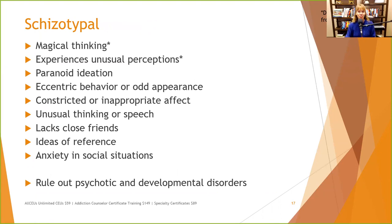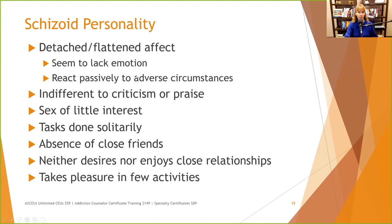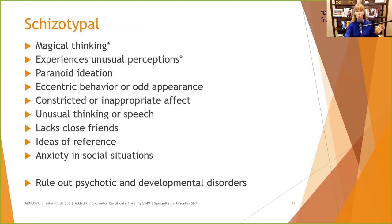Schizotypal: the defining features — the mnemonic is ME PECULIAR — include magical thinking and unusual perceptions. It's very similar to schizoid; however, schizotypal also includes magical thinking, unusual perceptions, paranoid ideation, eccentric or odd behavior, constricted or inappropriate affect, unusual thinking or speech, lack of close friends, ideas of reference, and anxiety in social situations. We want to rule out psychotic and developmental disorders. In my experience, schizotypal is not a very common diagnosis.